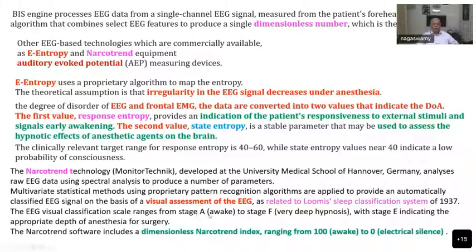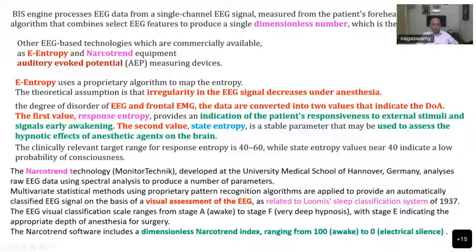Narcotrend is different from other monitors in that you don't get a dimensionless number but a display of alphabets — A means awake, F means fully under anesthesia, and E is the state of surgical anesthesia. However, the narcotrend index also includes a dimensional narcotic index ranging from 100 to 0, so a common numerical scale exists across all brain monitoring systems.